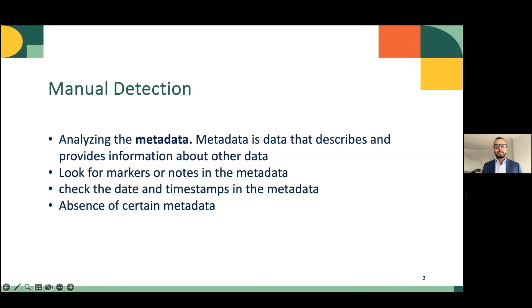One way to detect AI-generated content manually is by analyzing its metadata. For those unfamiliar with the term, metadata is data that describes and provides information about other data. When analyzing metadata, you can look if the author left markers or notes indicating that the content was generated by AI. Another way is to check the date and timestamps in the metadata, which might not match the actual event date. Also, in some cases, the absence of certain metadata could be an indicator that this content is manipulated or generated by AI.